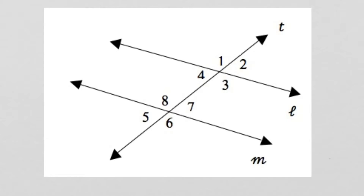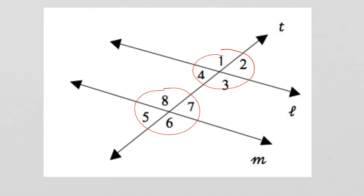When the transversal intersects those lines, it's going to create lots of different angles. We have these numbered here so we can see that when crossing two lines, it's actually creating eight angles — a set of angles at the top intersection and a set at the bottom. What we're really paying attention to is the relationship between all of those different angles.